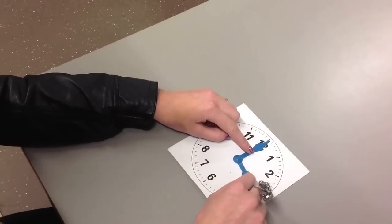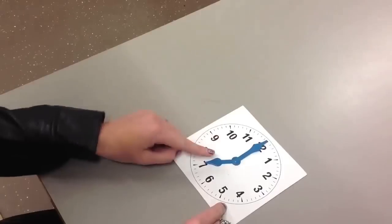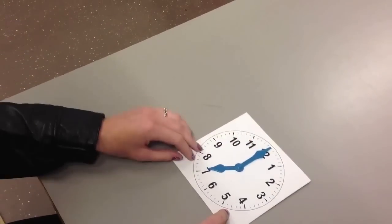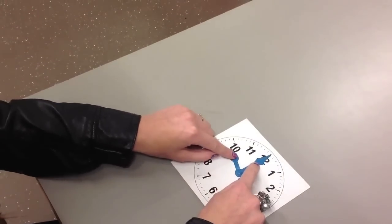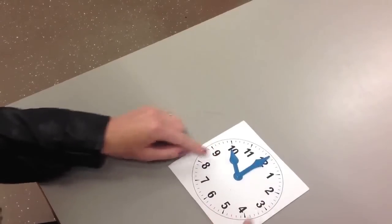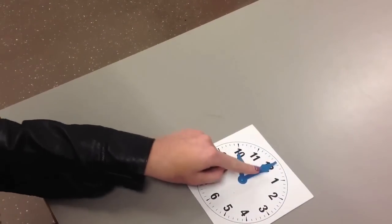If we move the short hand around, now we can see that it's 7 o'clock. And another example, the long hand is still pointing up to 12, it's now 10 o'clock.